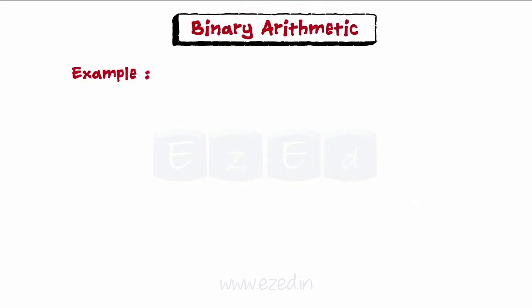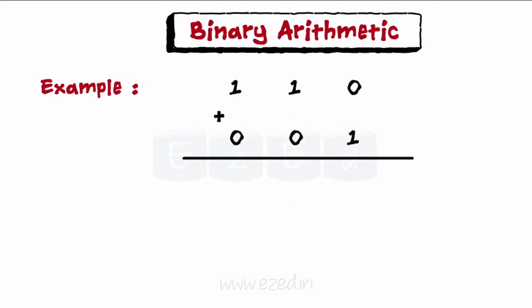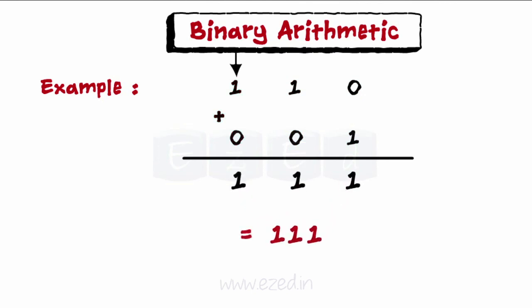Consider this example: we have to add 110 to 001. Starting from the rightmost bits, zero plus one is one. Next, one plus zero is again one. And one plus zero is also one. So the answer of the addition is 111.